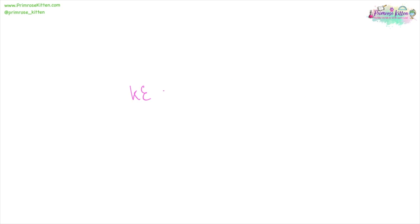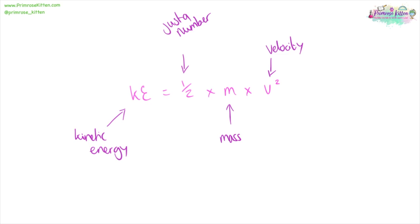To work out kinetic energy, that is half times mass times velocity squared. Kinetic energy is measured in joules, mass is measured in kilograms, and velocity is measured in metres per second. It's important to note that it is just the velocity that is squared, not the whole expression.